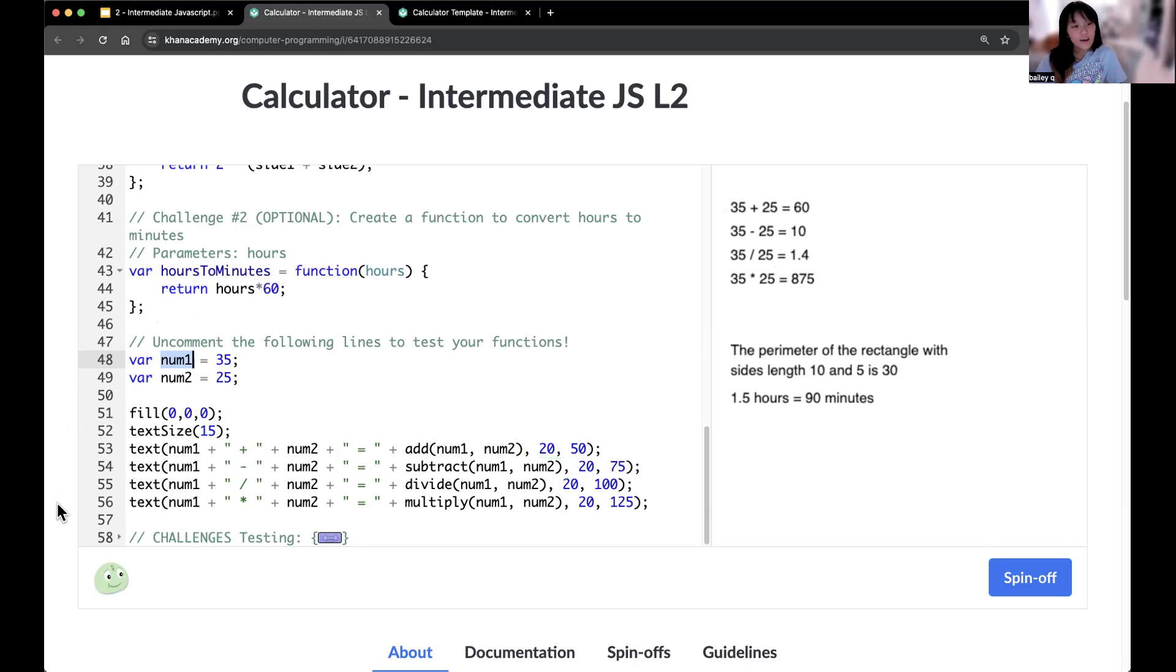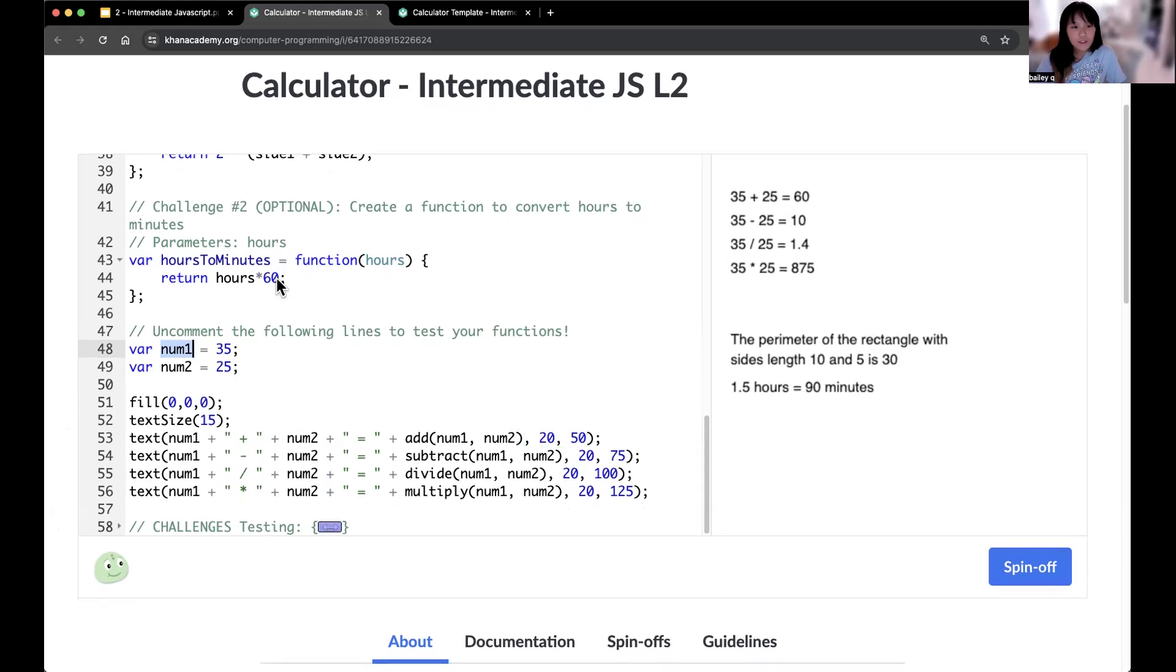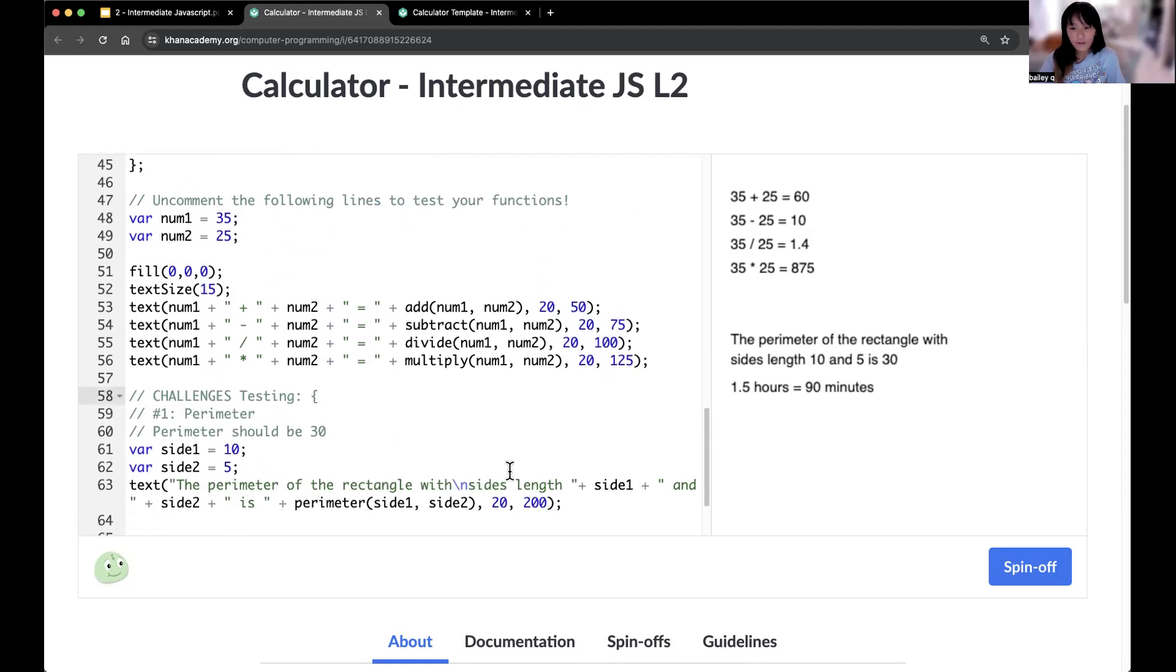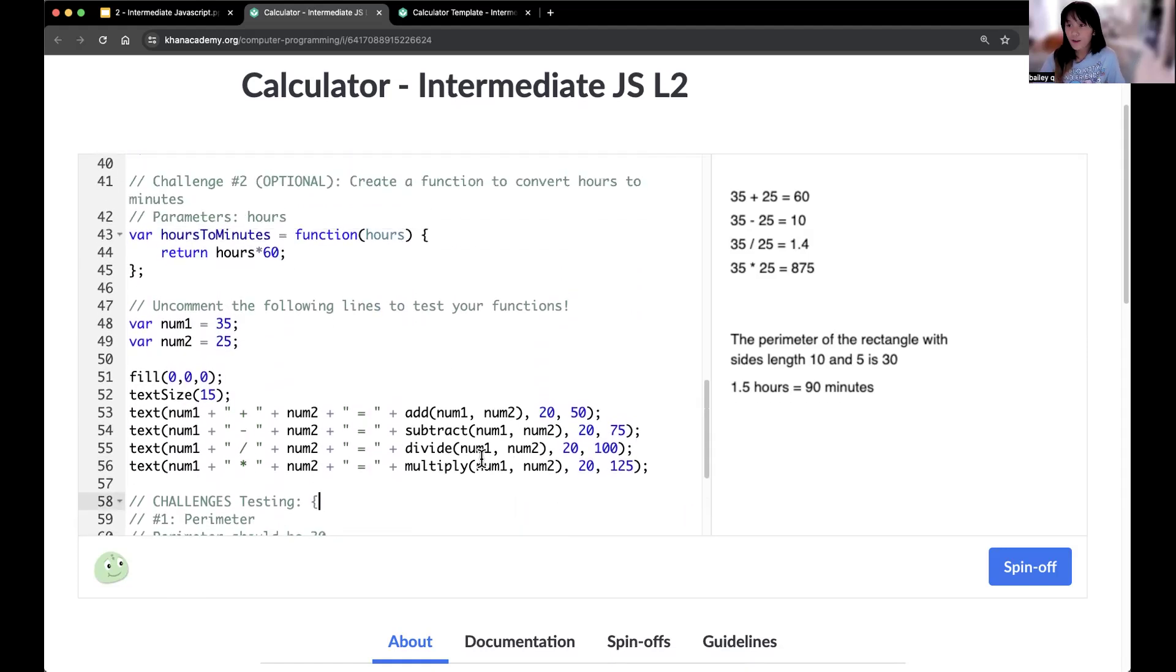And that's pretty much it. For the challenges, you apply the same concepts. You would add in your own return values. Or if you were making your own, let's say you're doing area, you would multiply those two values together. Or maybe you're doing area of a triangle. That would be a slightly different equation. And you would write in that equation, depending on those parameters. And then you can test them down here on the bottom.